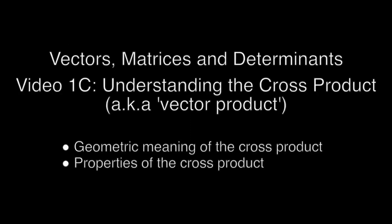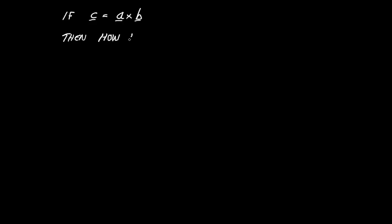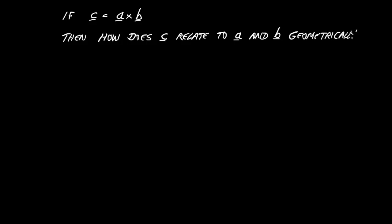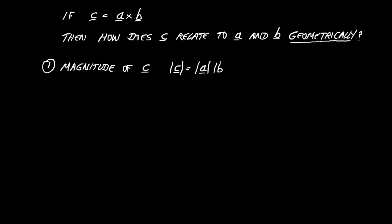In this video we look again at the cross product, asking about its geometric meaning and properties. If C = A cross B, we can ask what that vector C looks like in space. C has two properties: magnitude and direction. The magnitude of C is |A| × |B| × sin(θ), where θ is the angle between A and B — very similar to the dot product formula but with sine instead of cosine.